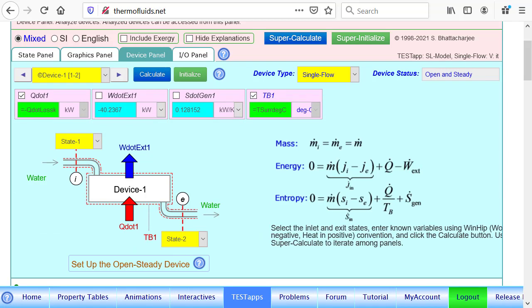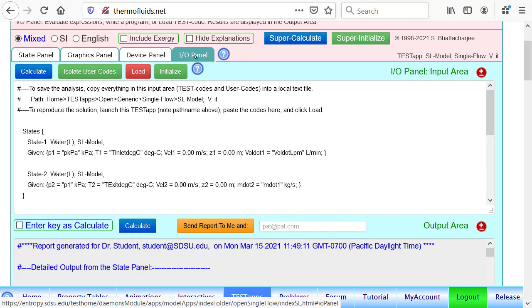And by the way, I have already, I forgot to mention that after the states are calculated in the device panel, I have loaded state one and state two as the inlet and exit state.